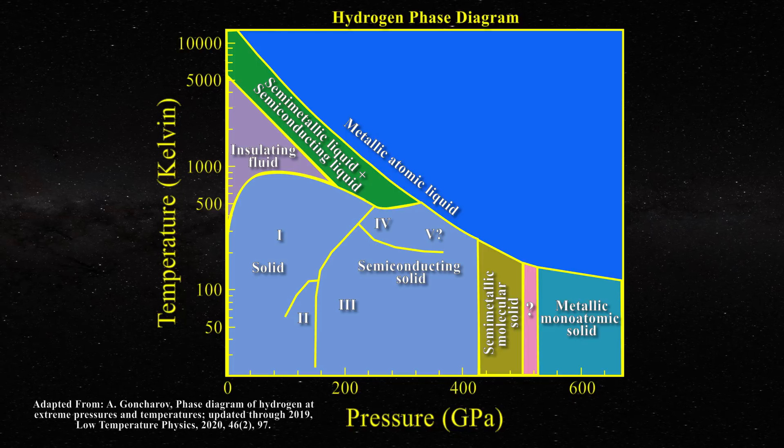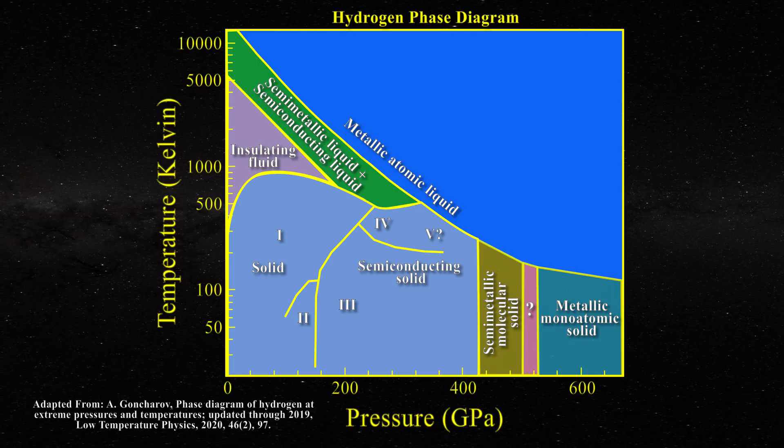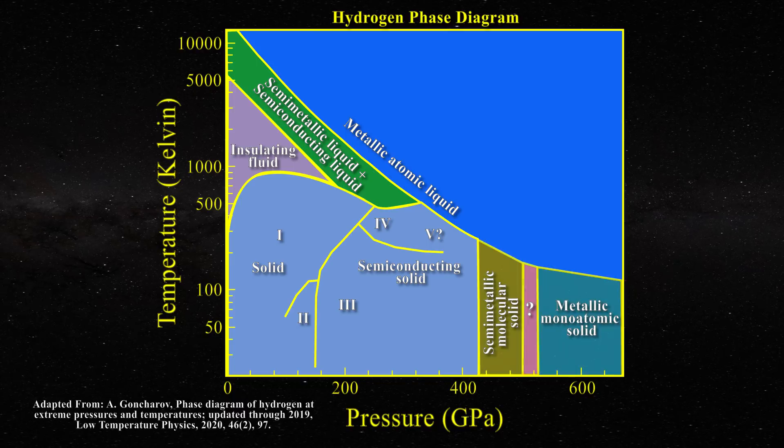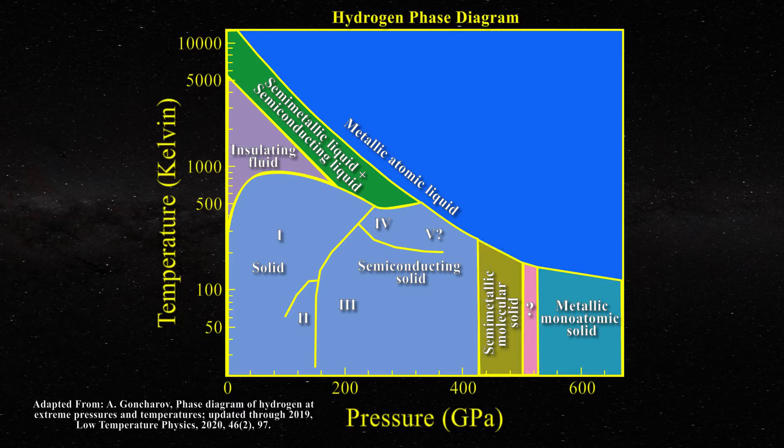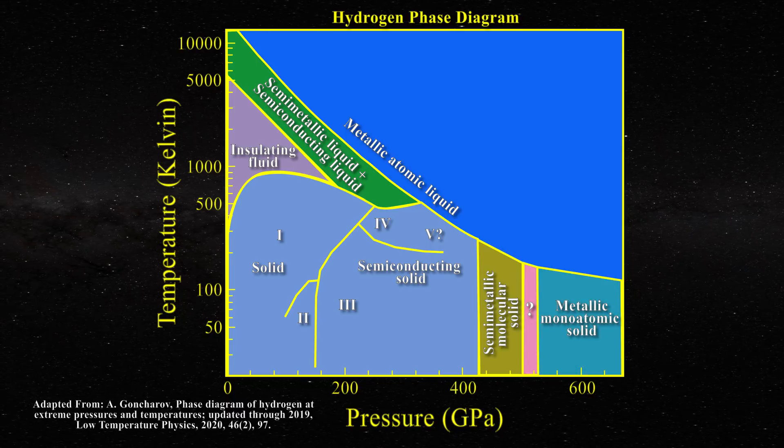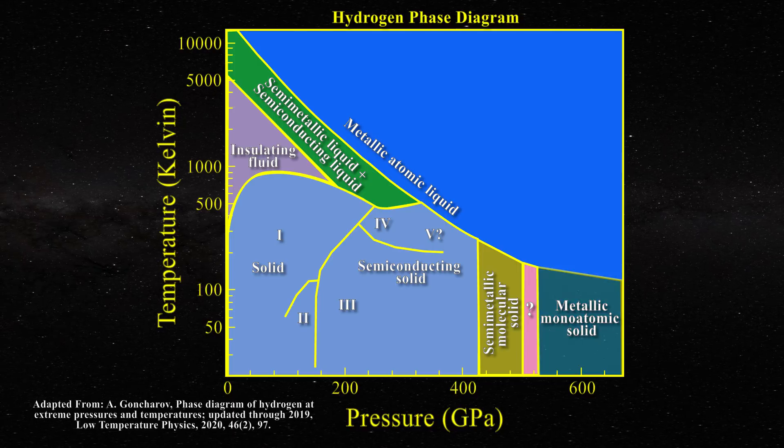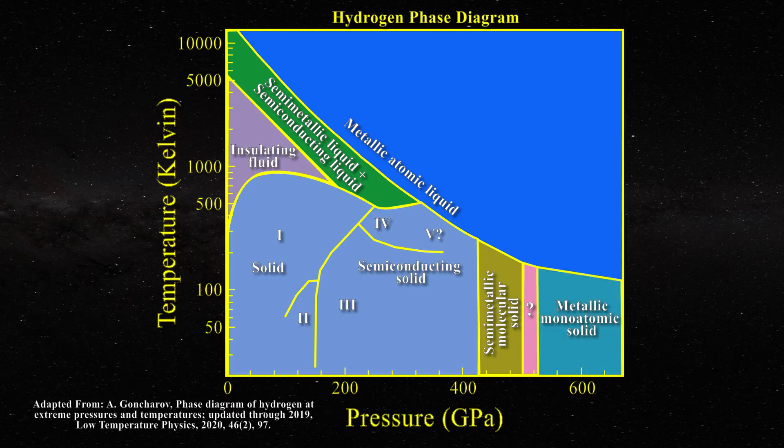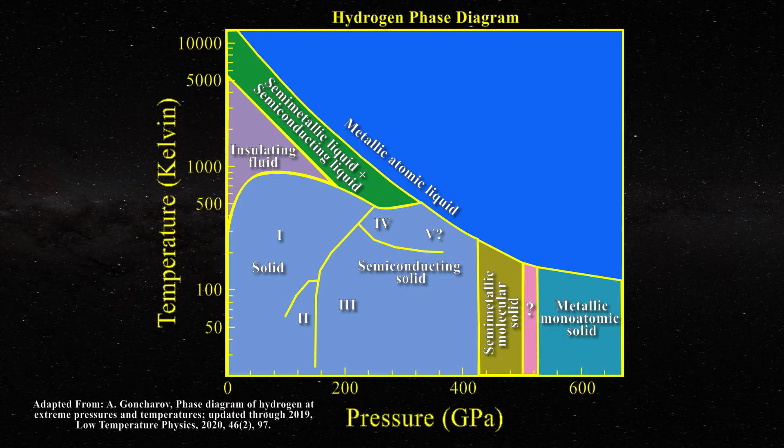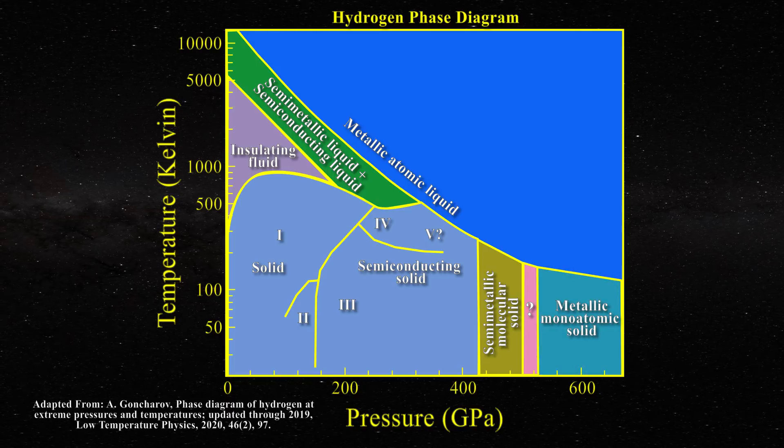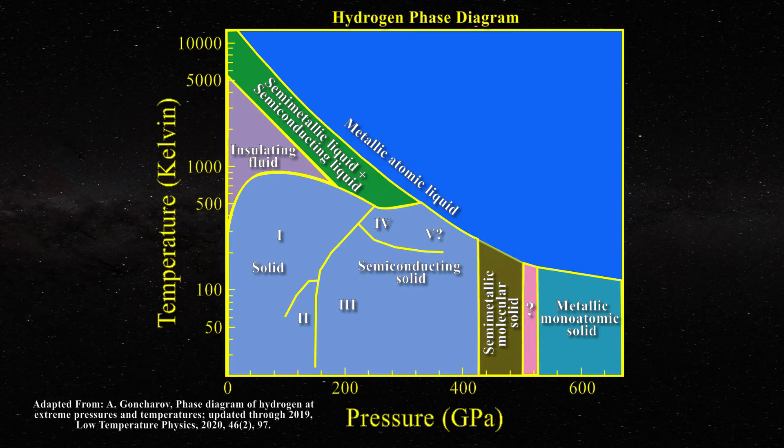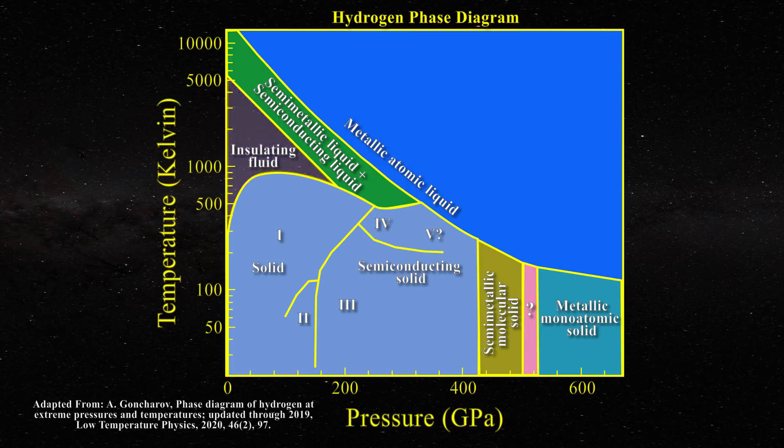At very high pressures but low temperatures on the lower right, one can find regions where hydrogen is predicted to exist first as a solid semi-metal and then as a solid metal. In the farthest region on the right, the hydrogen molecule is fully dissociated. The solid is said to contain only atomic hydrogen. The semi-metal region is thought to be molecular in nature.